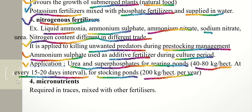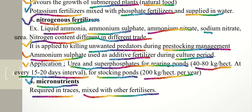Micronutrients are required only in traces and are mixed with other fertilizers and applied in the pond. By applying different types of fertilizers, a pond can be made fertile, automatically increasing fish production. This covers the topic of inorganic and organic fertilizers, which is one of the main steps in the construction and maintenance of a fish farm.